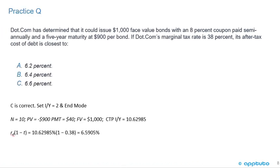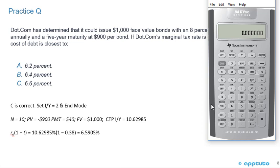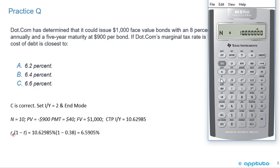This type of question should be fairly easy with practice. We need to solve for I/Y on this bond. Check parameters: second P/Y shows semi-annual, two periods per year. It's a five-year bond, so press 5, second, N — N equals 10. The present value is the price today, $900, made negative. It's an 8% bond paid semi-annually: 1,000 times 0.08 equals 80 per year, divide by 2 gives each payment equals 40. Enter 40 as the payment.